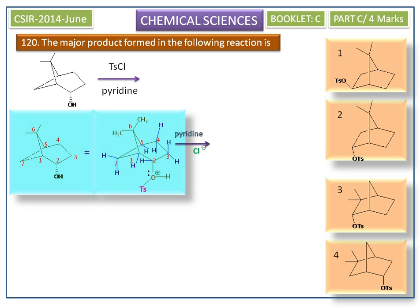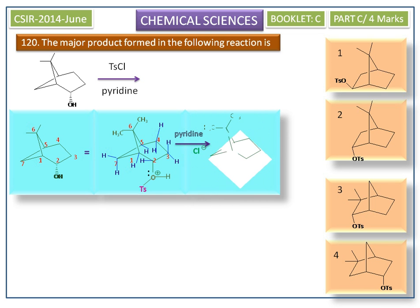Tosylates have a much better leaving group ability. The tosylate is cleaved from this bicyclic molecule, leaving a highly strained bicyclic carbocation.